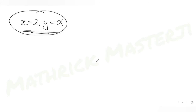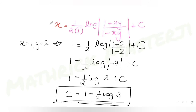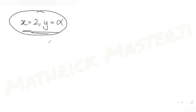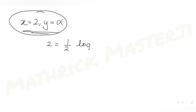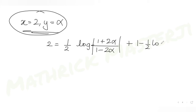Now substituting the second condition x = 2 and y = α into the solution: 2 = (1/2) log|(1 + 2α)/(1 - 2α)| + C, where C = 1 - (1/2) log 3.